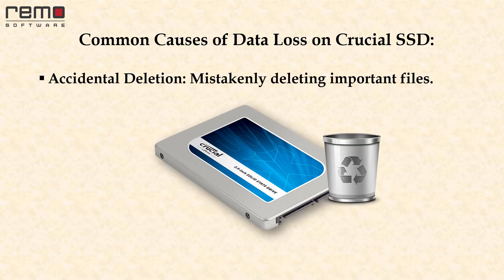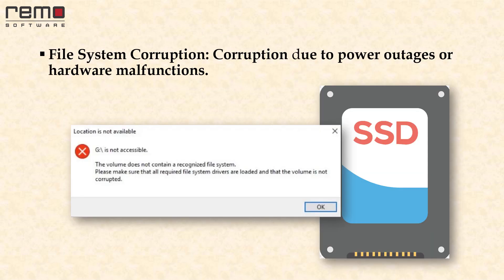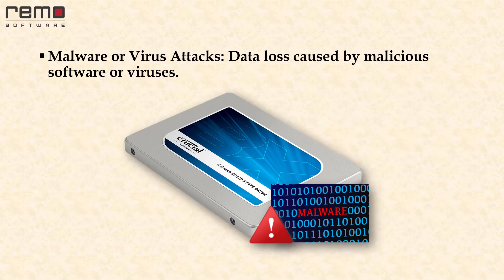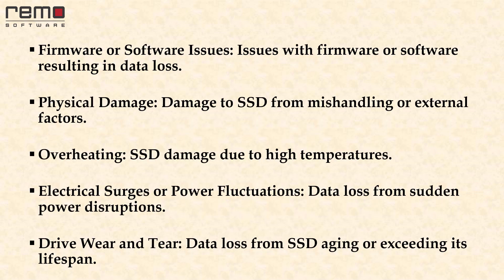Common causes of data loss on Crucial SSD include: accidental deletion — mistakenly deleting important files; file system corruption — corruption due to power outages or hardware malfunctions; malware or virus attacks — data loss caused by malicious software or viruses; and firmware or software issues resulting in data loss.